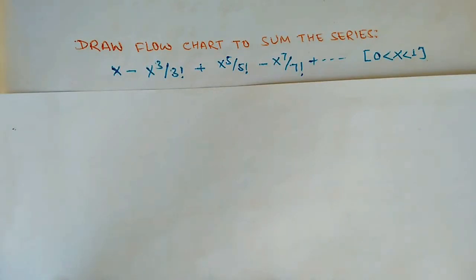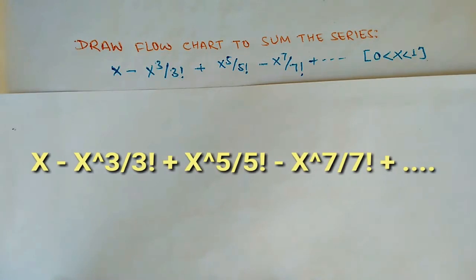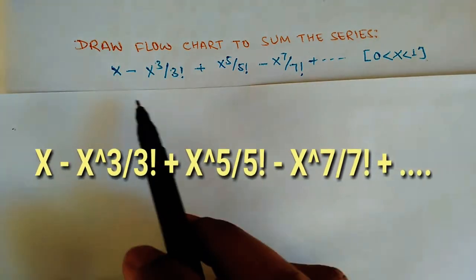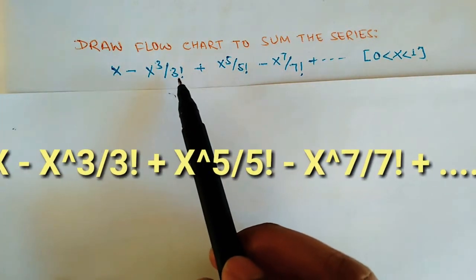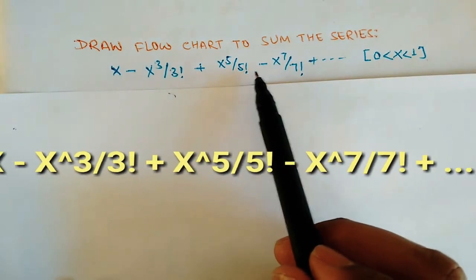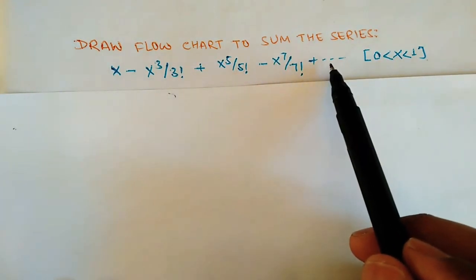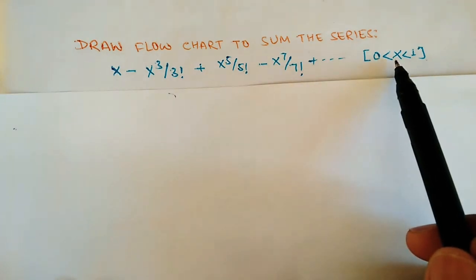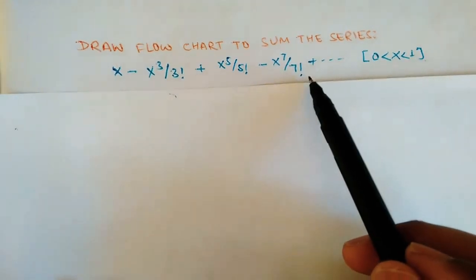Hi everyone, welcome. In this video lecture today we are going to draw a flowchart for the given series: x minus x to the power 3 by 3 factorial, plus x to the power 5 by 5 factorial, and so on. The condition is that x lies between 0 and 1.